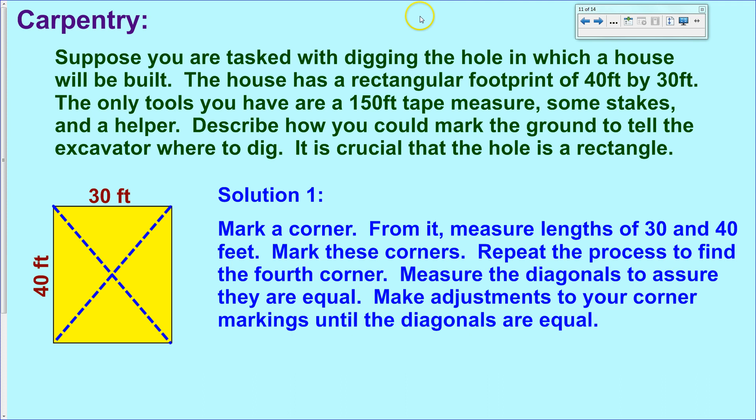Okay, one solution is to think about the diagonals. If we want a rectangle, then we know that the diagonals have to be of equal length. And you might have noticed that I chose these distances quite conveniently. This is a version of a 3, 4, 5 triangle, so it would be 30, 40, and 50. So we'd want the diagonals to be 50 feet.